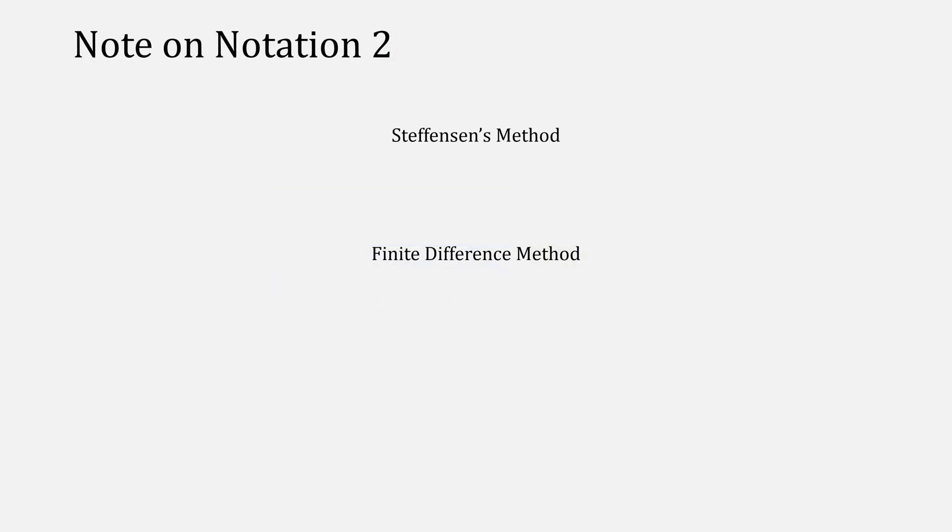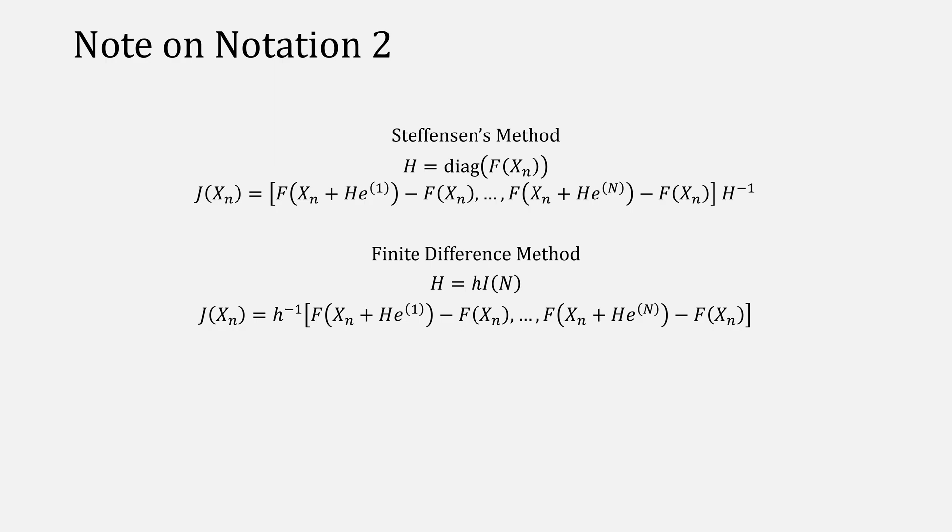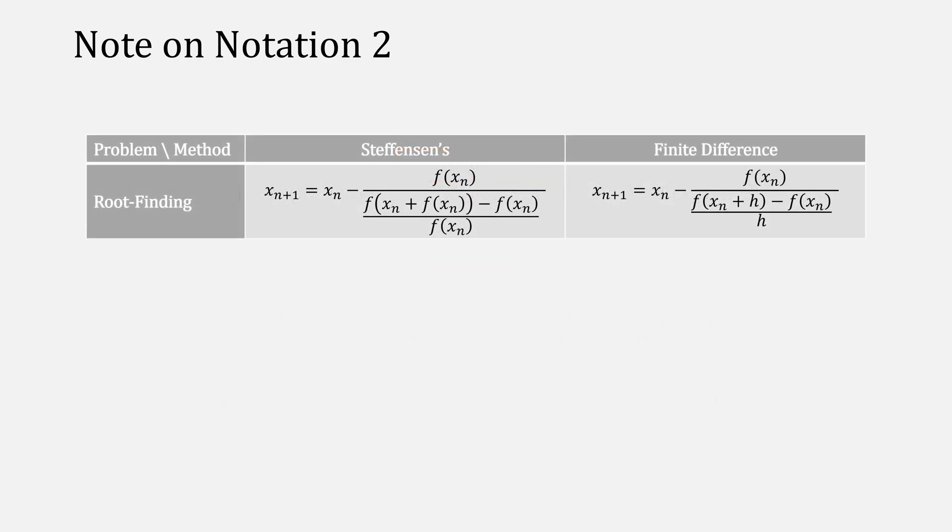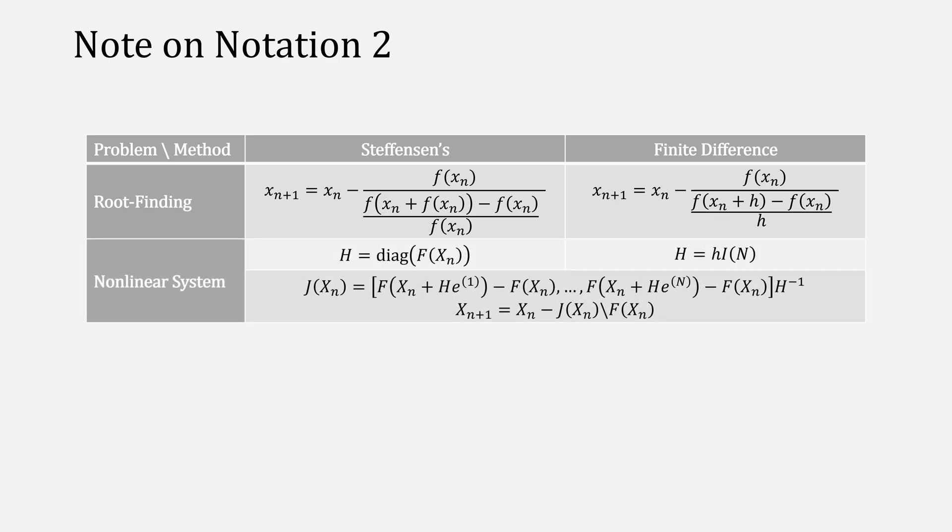Just a little more on Stephenson's and finite difference. They use different values for the capital H, but the methods they use are very close. In fact, if we multiply finite difference by the identity, we can actually use capital H by multiplying little h inverse against the identity, giving the same equation. The only difference between the two is what we use for capital H. The same thing is true even when finding roots of equations using finite difference method and Stephenson's method. We can let h be the value of f(x) in finite difference method to give us Stephenson's. The same is true for nonlinear systems.